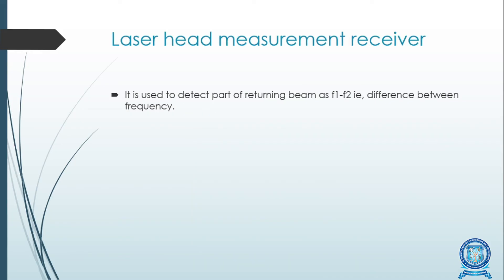The third component is the laser head measurement receiver. It is used to detect the part of the returning beam as f1 and f2, where the difference between these frequencies is called delta f. During measurement, a laser beam is directed through optics in the measurement path and then returned to the laser head's measurement receiver, which detects the returning beam frequency and the Doppler-shifted frequency, command delta f.